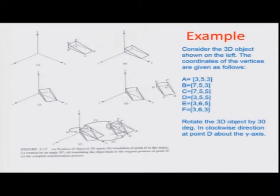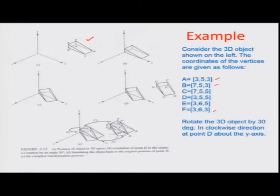In this example problem, we consider an object with respect to an X-Y-Z Cartesian coordinate axis. The various coordinates of the different points A to F of this 3D object are: A(3,5,3), B(7,5,3), and so on up to F(3,6,3). We want to execute a rotation of 30 degrees in the clockwise direction about the Y-axis. The Y-coordinate does not change, and the rotation is around point D — along the D-E edge which is parallel to the Y-axis.